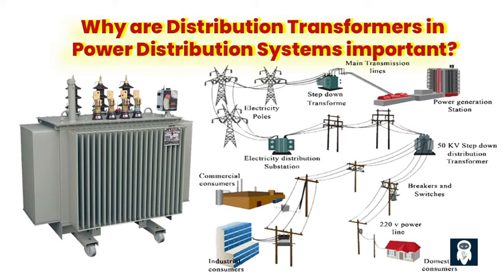Distribution transformers play a critical role in our power distribution systems. They step down voltage from high levels to a safer and usable level for our homes, offices, and industries, preventing damage to our devices. Distribution transformers also ensure that electricity flows smoothly and efficiently from the power grid to our homes and businesses, acting as traffic controllers directing electricity where it's needed most. Without them, power distribution would be chaotic and unreliable.